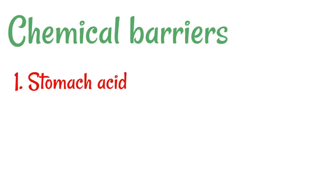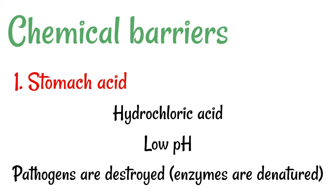First, chemical barriers. The first chemical barrier is stomach acid. Stomach acid is hydrochloric acid, and it's got a very low pH. If pathogens enter the stomach, their enzymes get denatured because of the low pH environment.